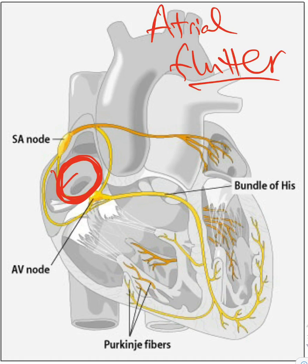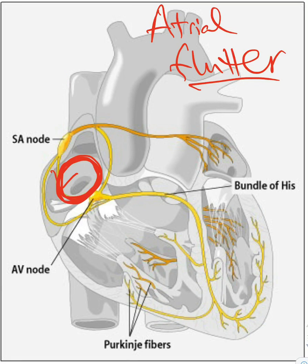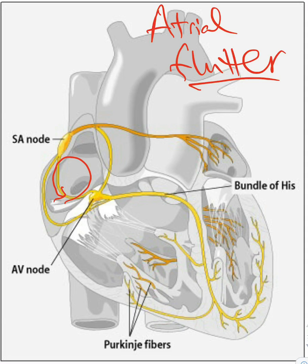The circuit can go clockwise or counterclockwise — some people even call it anti-clockwise. At this level you're not going to be asked to know whether the patient has clockwise or anti-clockwise flutter, but what you have to know is that the circuit is happening in the right atrium and the circuit is so fast that its speed is 300 beats per minute.